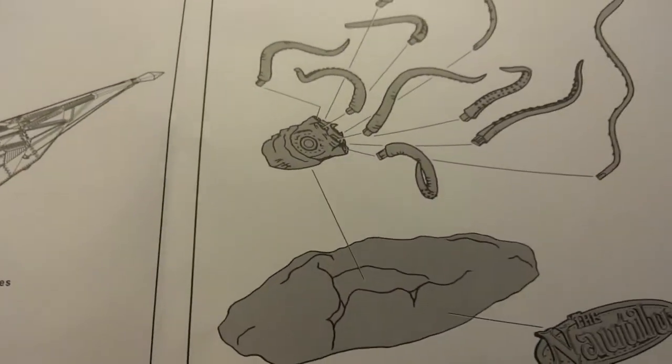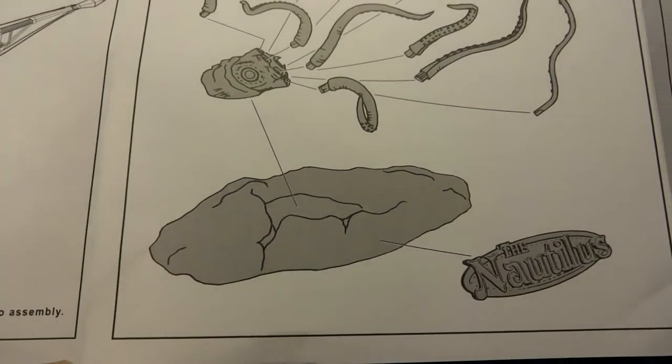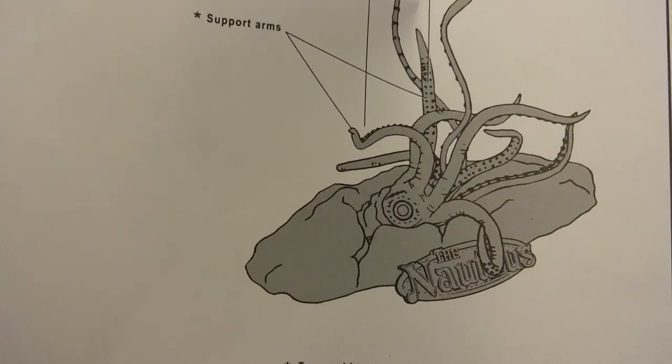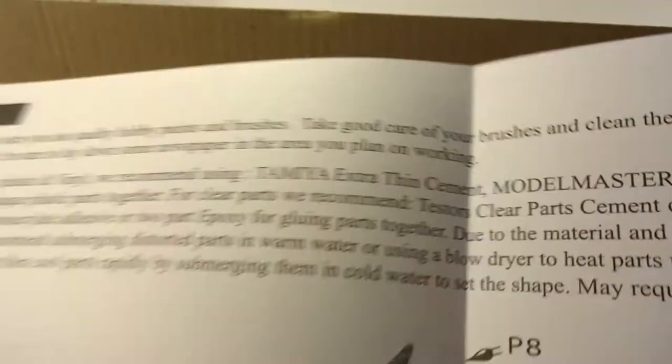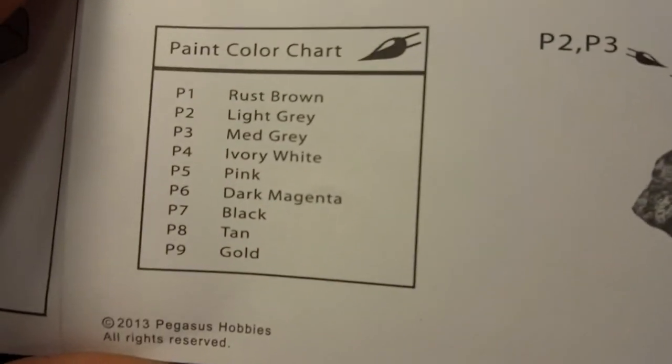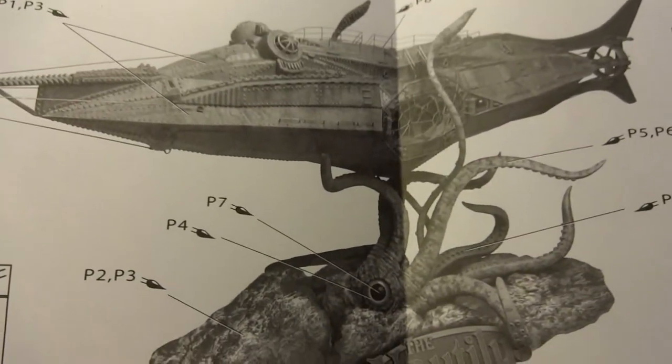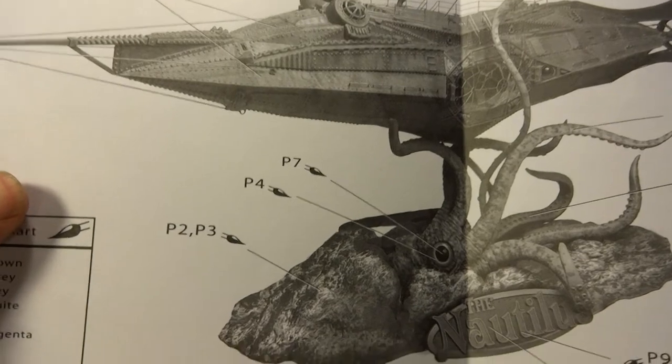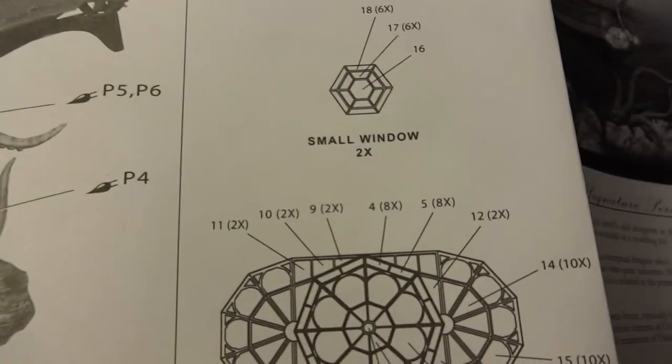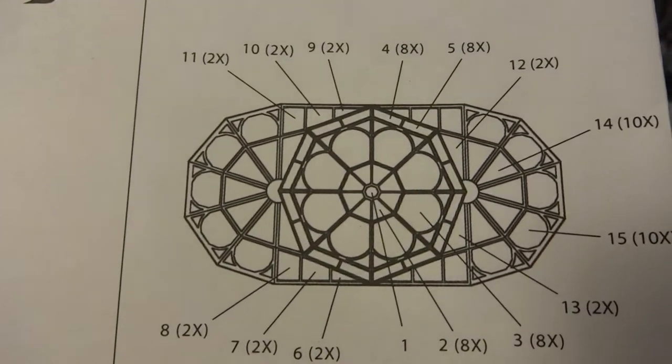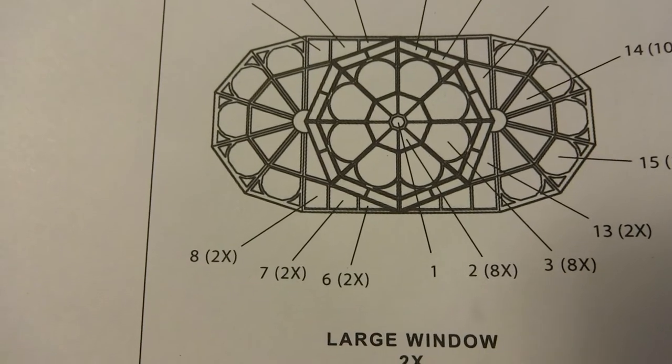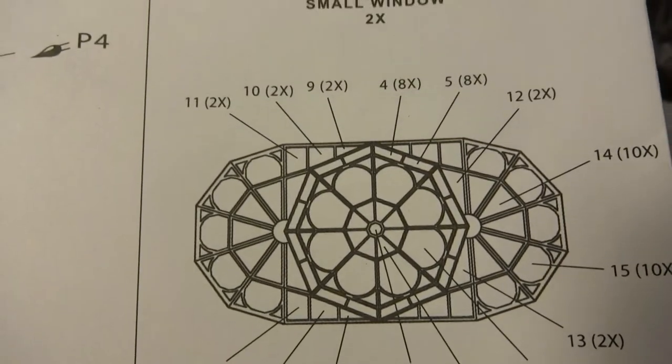Right here, we've got the construction of the base, ship being put into place. Then we've got a little painting chart for painting suggestions on how you can paint it. Finally, we've got the number callout for the window masking and how that's going to be executed.